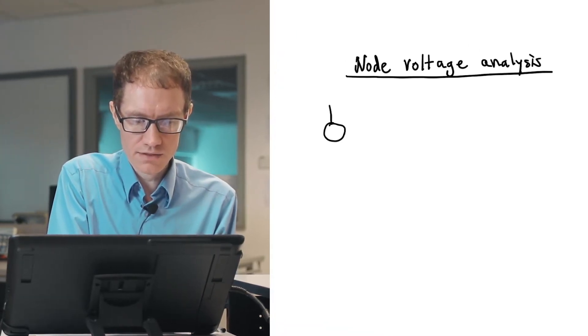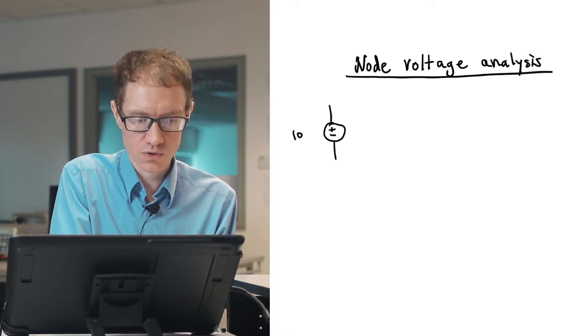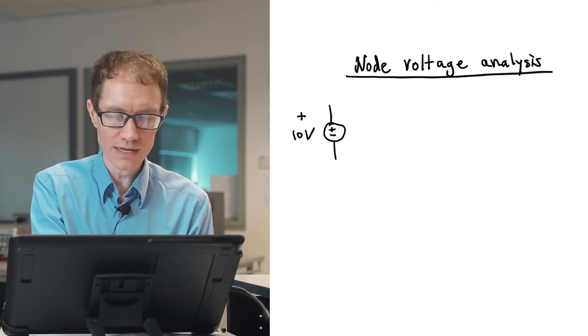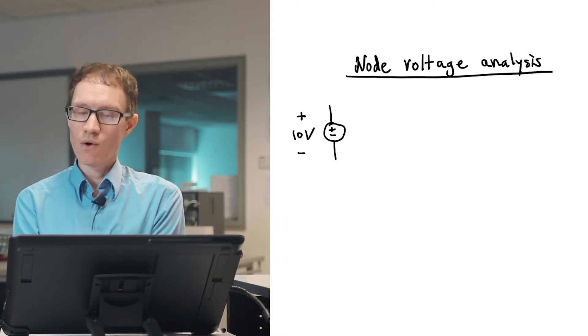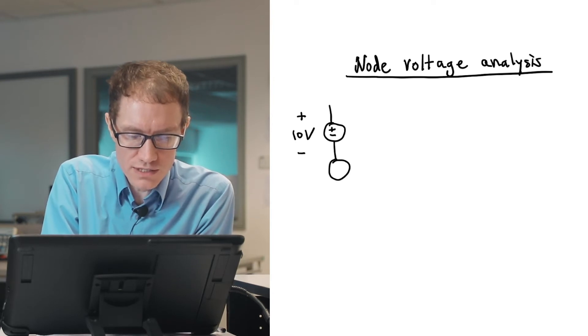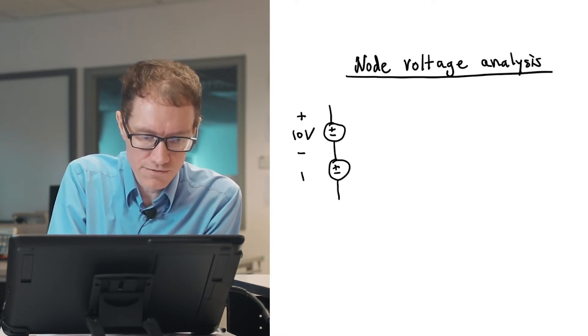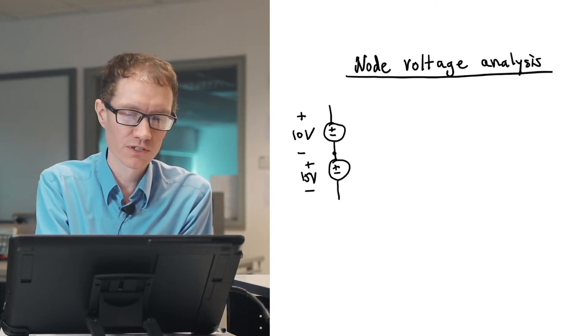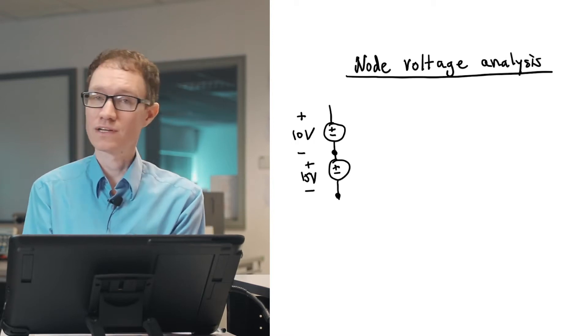But in node voltage analysis, we can make it look like we only have one point for a voltage by giving it a common reference. And a convenient reference is ground in most circuits. So for example, let's say that we've got a 10 volt DC source. What that means is that we have 10 volts between the two sides of the source. However, what if I put another source in series with it, and let's say that this is a 15 volt source.